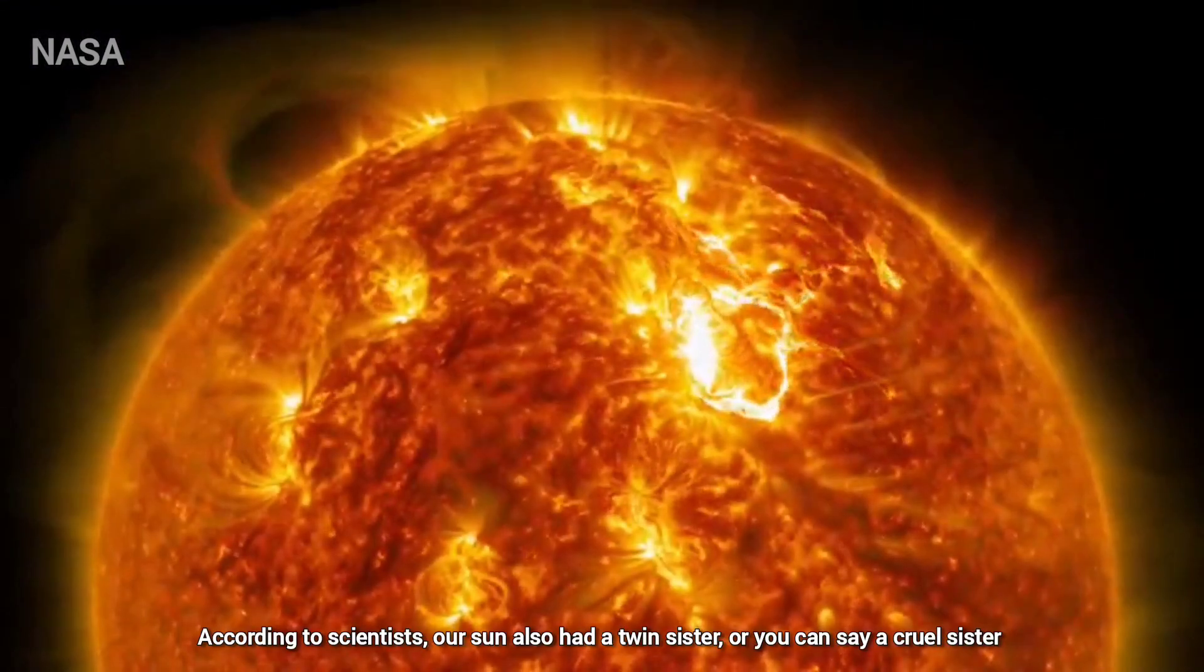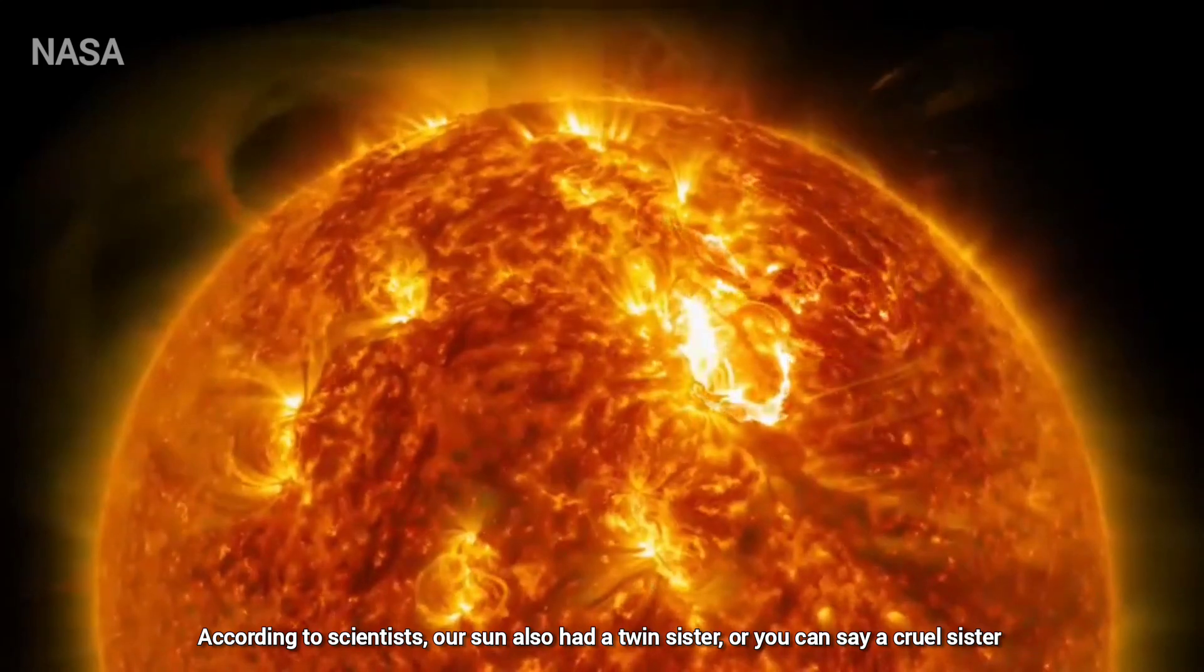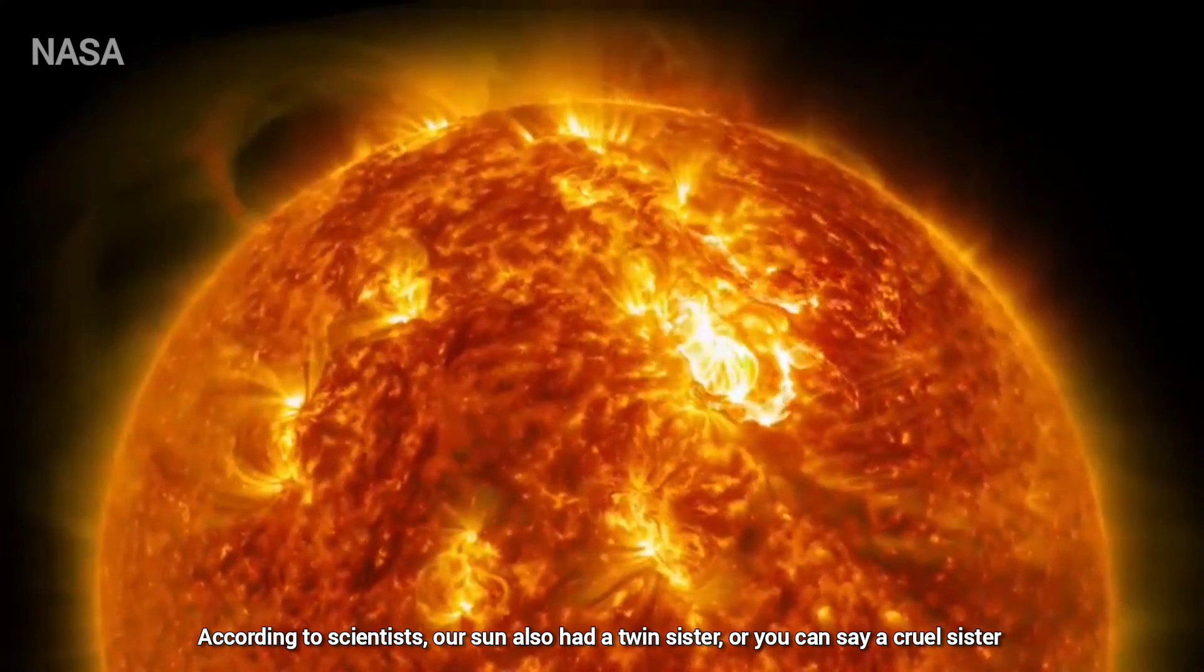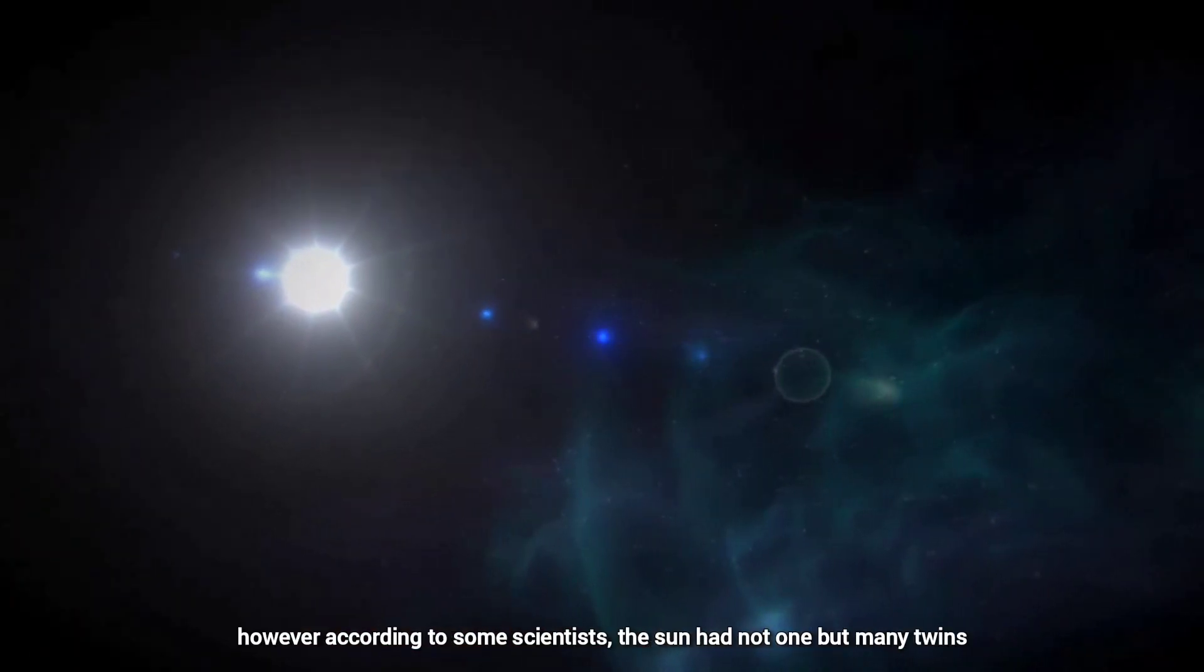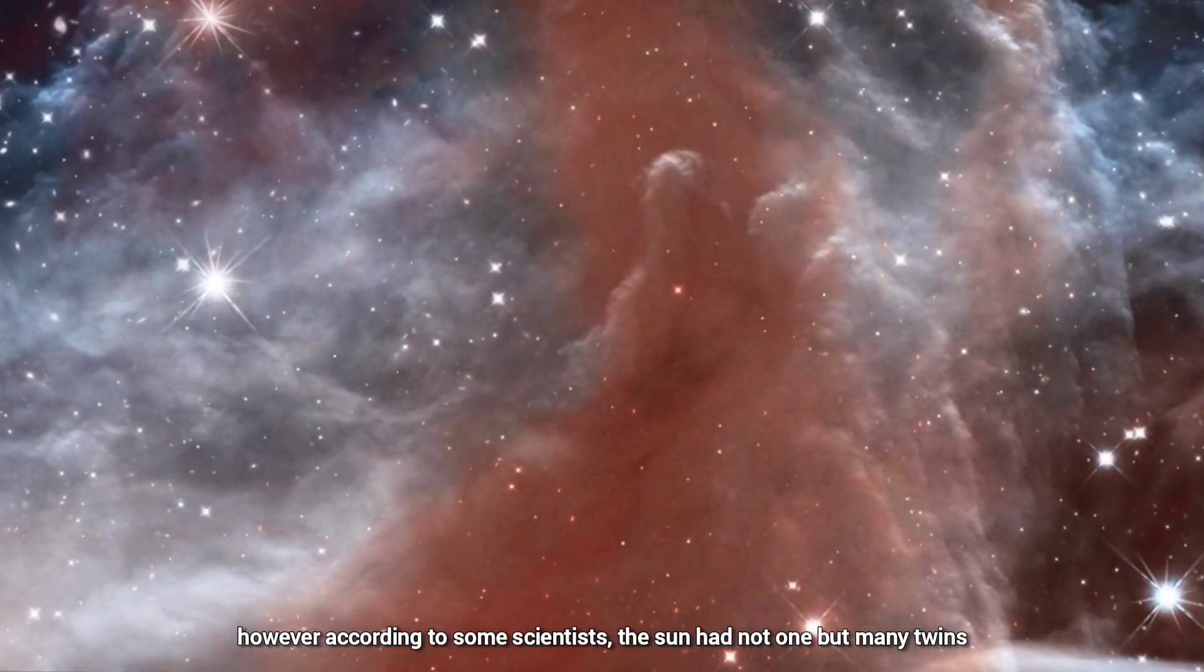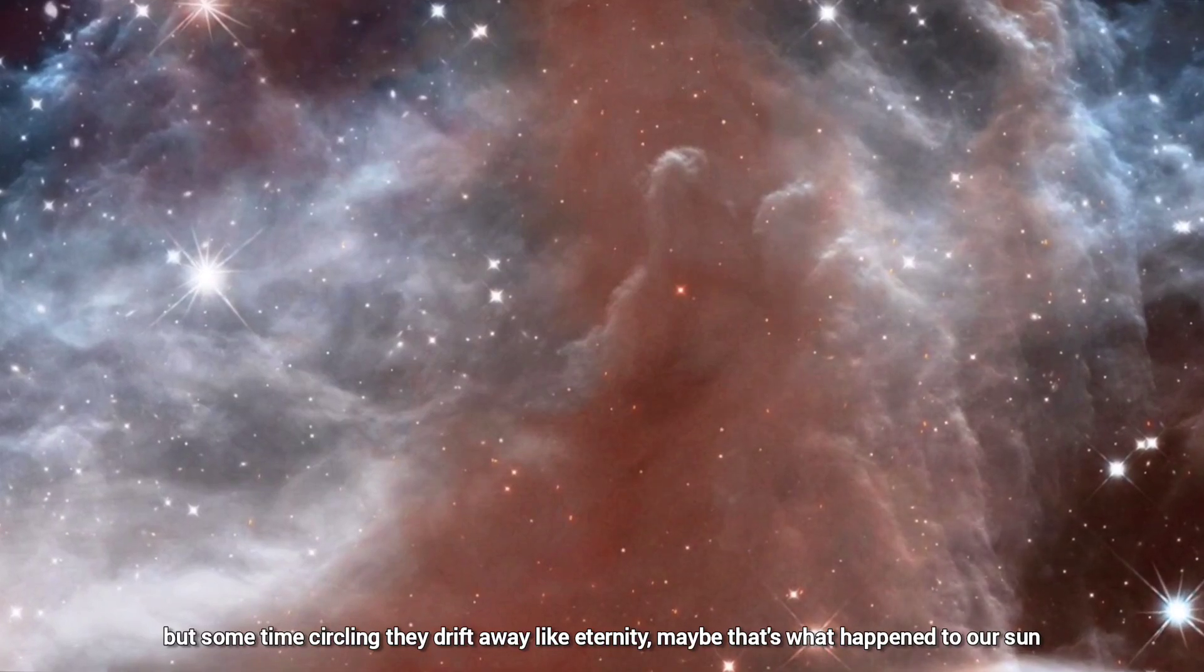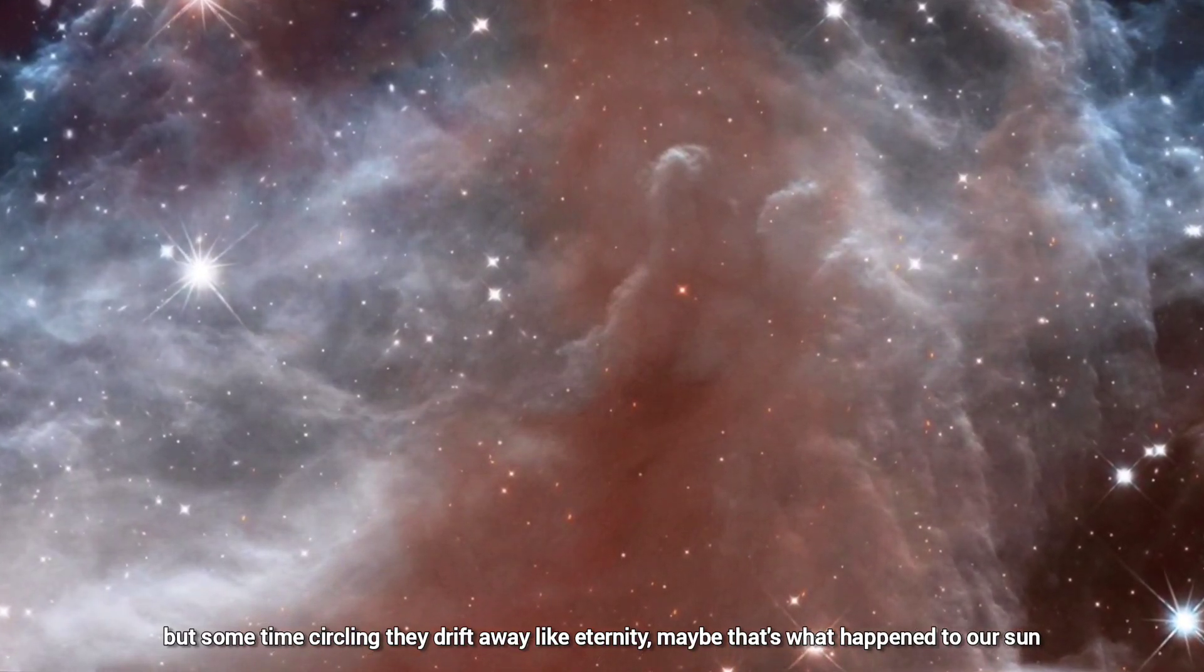According to scientists, our Sun also had a twin sister, or you can say a cruel sister. Although present in the first case, later it gradually drifted away. However, according to some scientists, the Sun had not one but many twins. But sometimes circling they drifted away like eternity. Maybe that's what happened to our Sun.